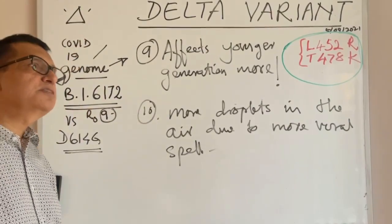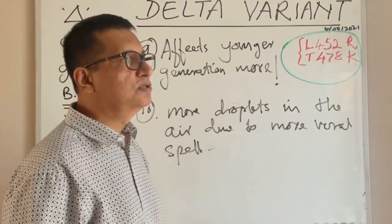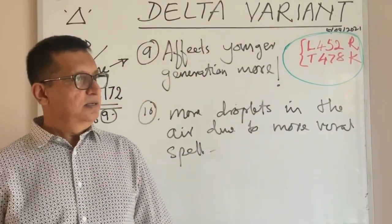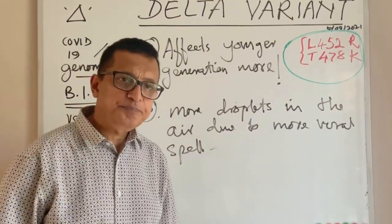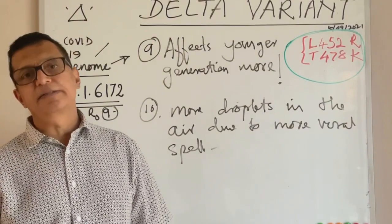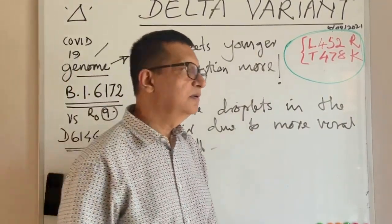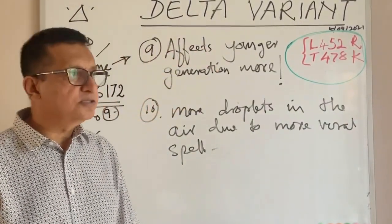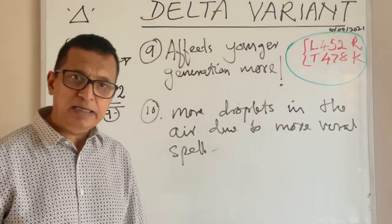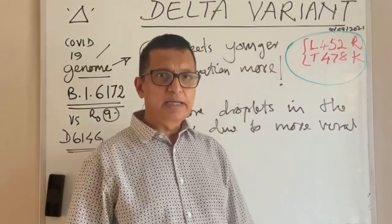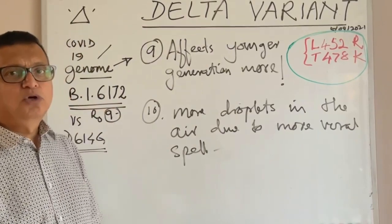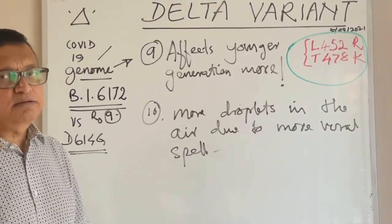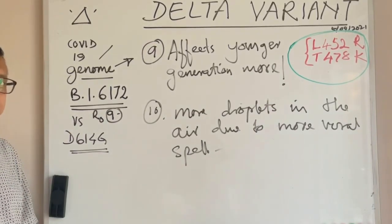Previously, loss of smell and taste were considered main symptoms, but in the delta variant these are not prominent. The delta variant is instead notorious for causing hearing defects — some people develop hearing problems due to delta variant infection.